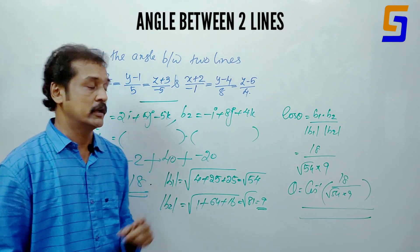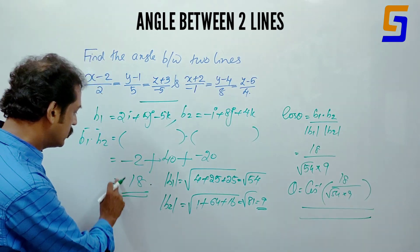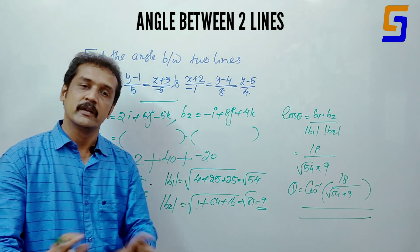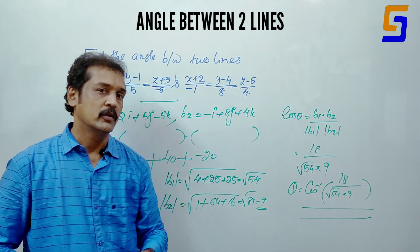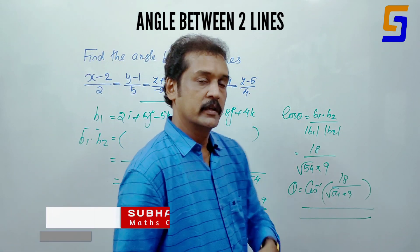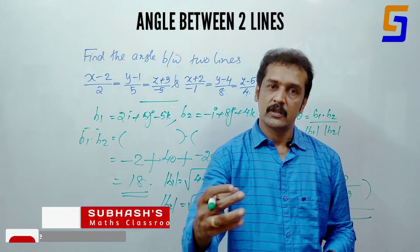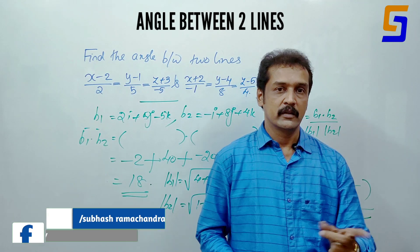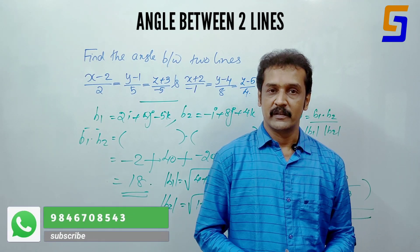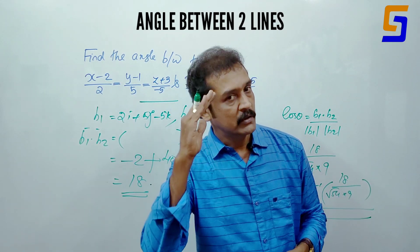These two lines are perpendicular. We say that the lines are perpendicular — b1 dot b2 equals 0. If you like this video, you can share it. Subscribe to my channel and support me. Good bye. Thank you.